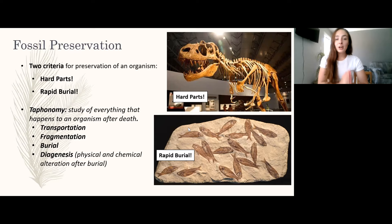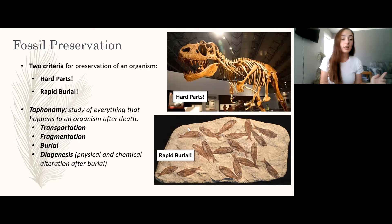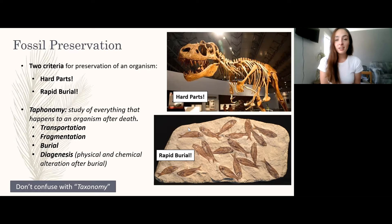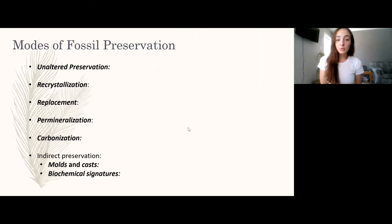Next: taphonomy. Taphonomy is a term you need to know — it's the study of everything that happens to an organism after its death: any transport, fragmentation, type of burial, how fast or slow the burial was, and diagenesis, which is alteration post-burial. Don't confuse this with taxonomy, which is the term we use to describe the classification and naming of things.